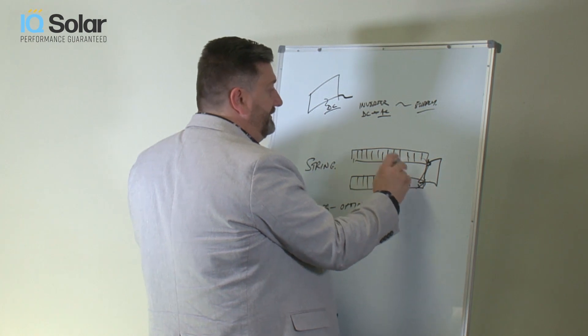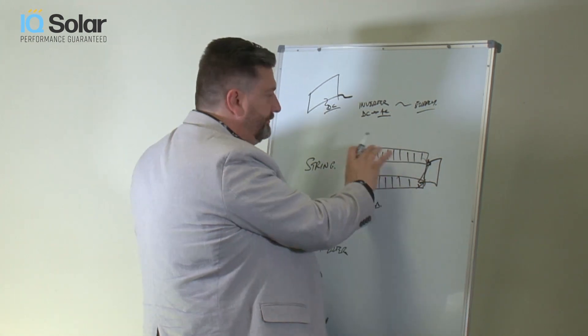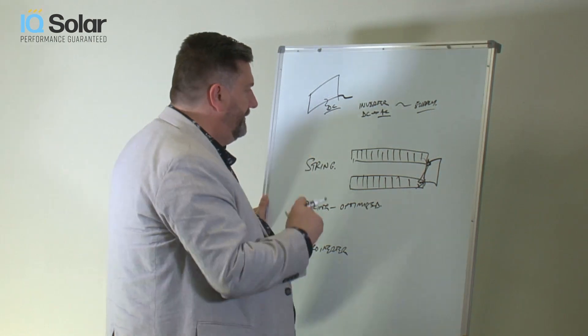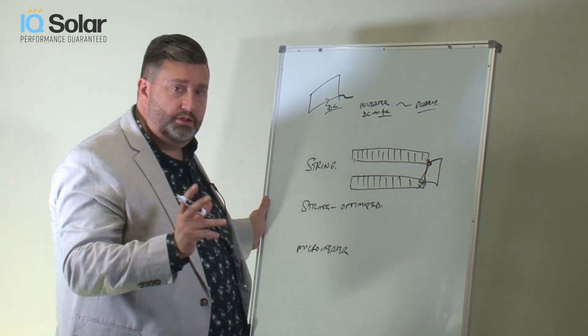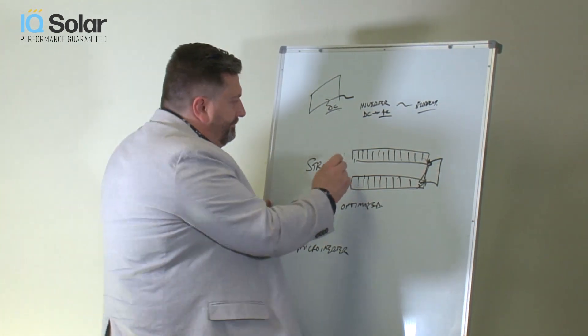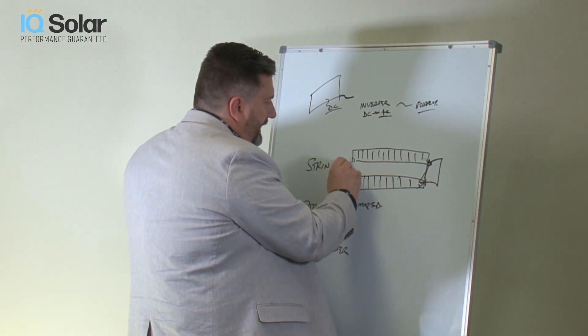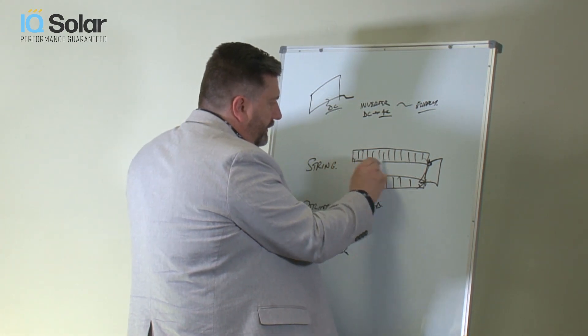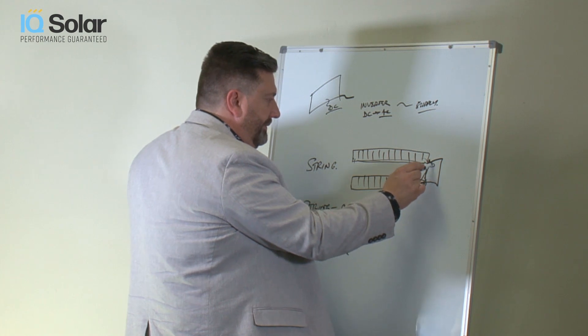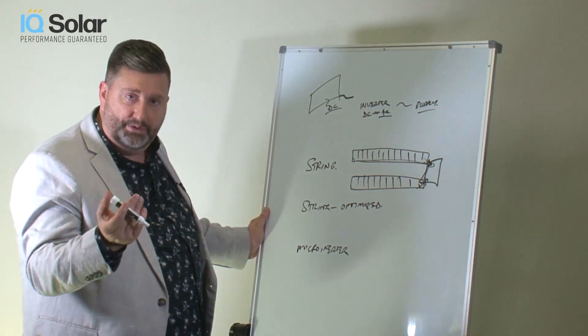There are actually more ways to do this, you can have multiple strings and so forth. But just to keep it simple, two independent strings. Power flows, is cabled up and flows along here into this particular MPPT.